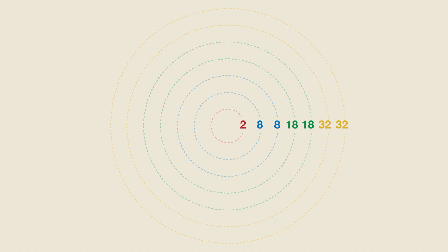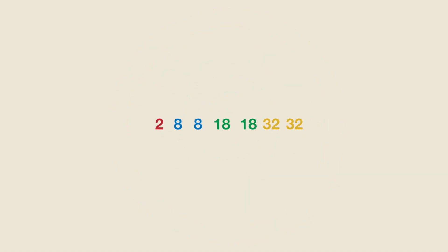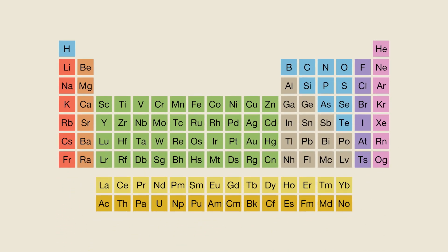So, we have a pattern that looks like this: 2, 8, 8, 18, 18, 32, 32. Try to remember that because it's going to show up again. Let's now bring up the standard periodic table.